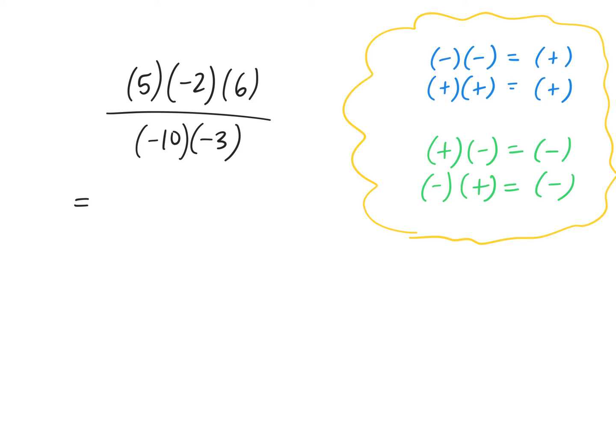Just a reminder, whenever you see brackets next to each other, we know that we have to multiply. So we're taking, look here, a positive 5 and multiplying it by a negative 2. Let's do that first. What's positive 5 times negative? A positive times a negative gives me a negative. What's 5 times 2? 10. We still have to multiply it by the 6. So I'm going to put that here. I've just simplified one part of it.